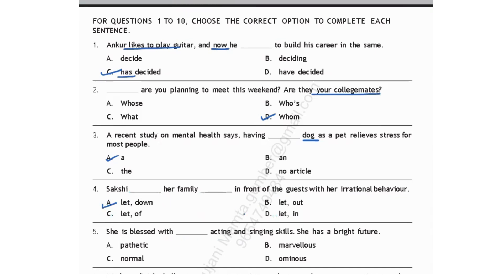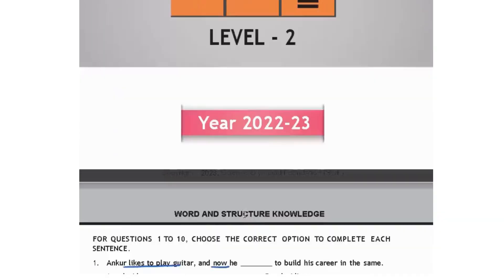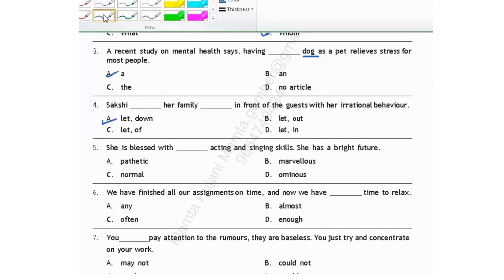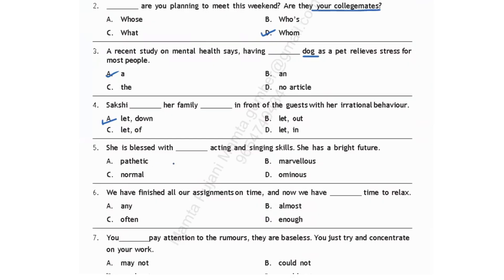She is blessed with dash acting and singing skills. She has a bright future. 'Pathetic' means poor or bad, so we cannot use it here. 'Marvelous' means wonderful — she is blessed with wonderful acting and singing skills. This fits perfectly. 'Ominous' does not fit either. So the correct answer is option B, marvelous acting and singing skills.